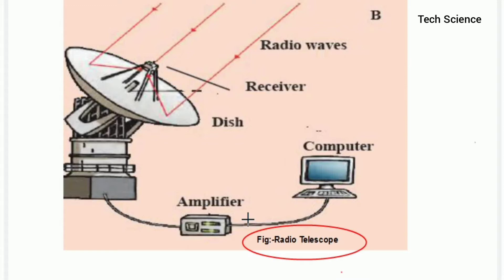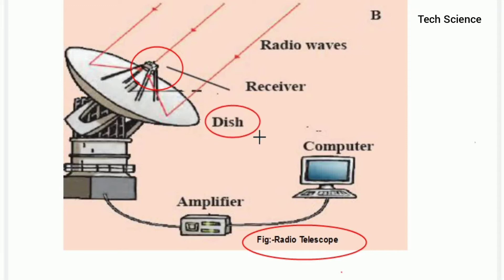Generally, a radio telescope is a kind of astronomical instrument which consists of first a radio receiver, and second an antenna system. The antenna is a parabolic structure and we call it a dish. It is used to detect RF radiation — that is, radio frequency radiation — that is emitted by extraterrestrial sources.